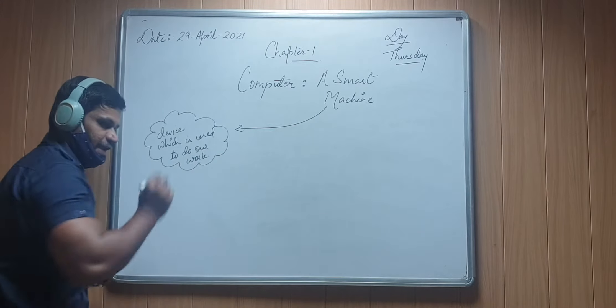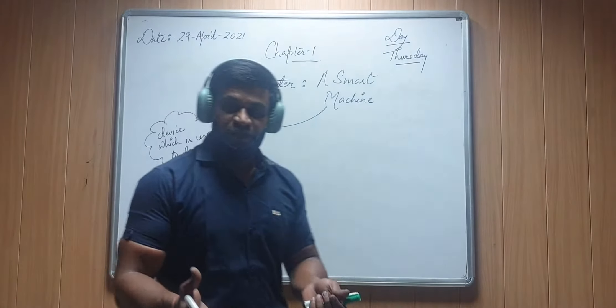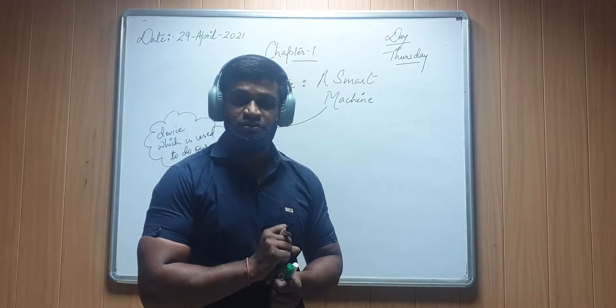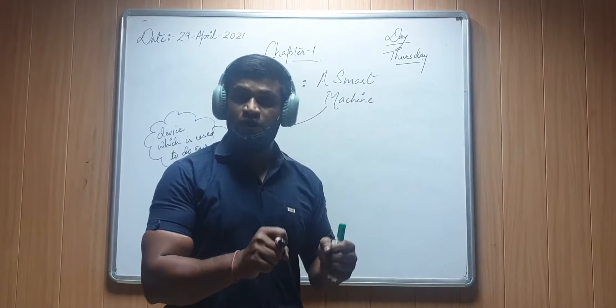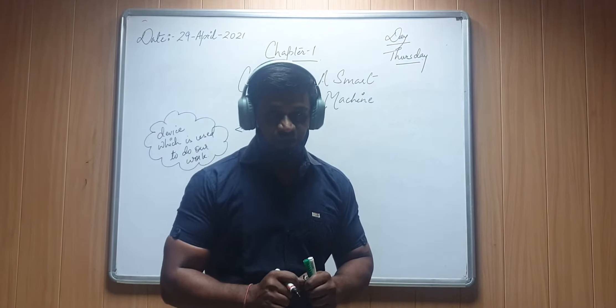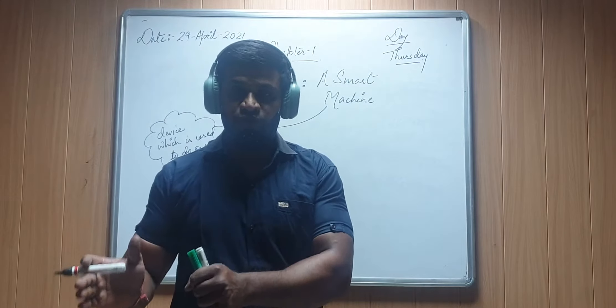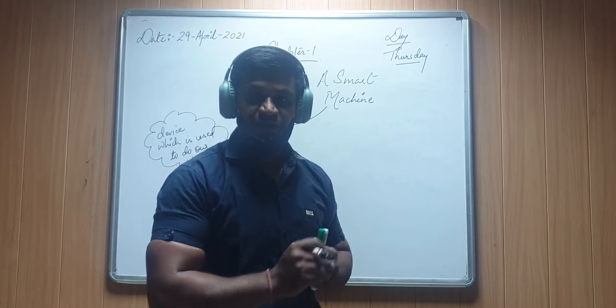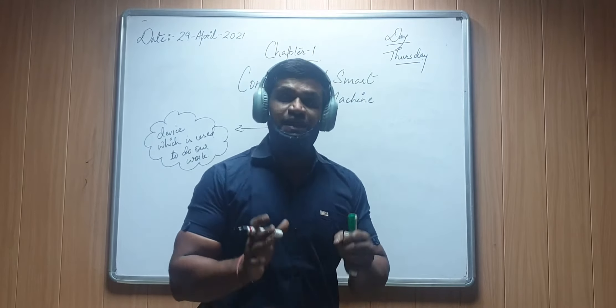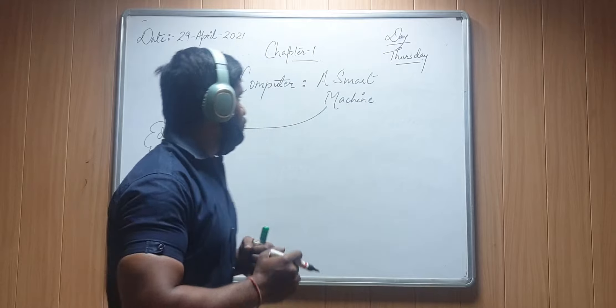Like if we say washing machine, it's also a machine which helps to wash our clothes. Sewing machine is also a machine which helps to stitch clothes. Similarly, your vehicle, that is bike or car, is also a machine that helps to transport or move from one place to another. So machines are those devices which help us to do our work. First of all, computer is a machine.